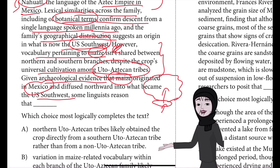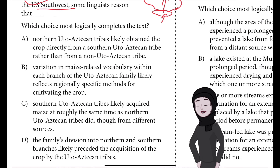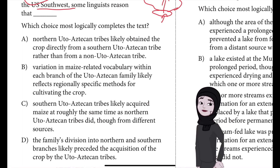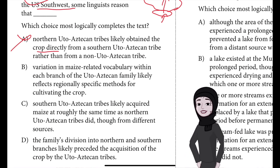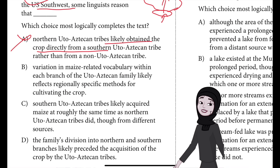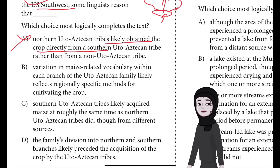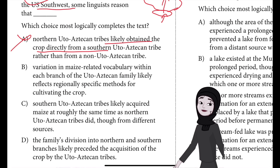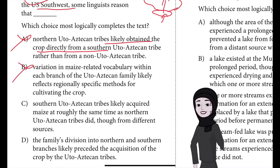Mexico is where maize originated, and it then spread northward toward the current U.S. region. Answer A is incorrect because the text focuses on vocabulary pertaining to maize in the branches of the Uto-Aztecan language family. Referring only to how some tribes obtained maize wouldn't address the role of language. Moreover, if northern tribes acquired maize from a southern Uto-Aztecan tribe, they likely would have also picked up southern terminology for maize.